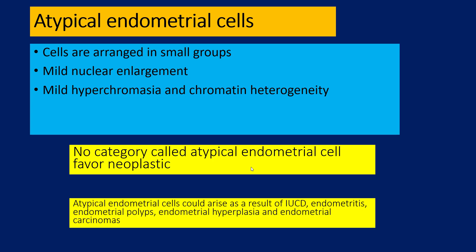So this concludes the endocervical group. We are going to next move on to the endometrial group — it's a much shorter one. Atypical endometrial cells: the important thing to start with is that there is no category called atypical endometrial cells favor neoplastic. So it's either atypical endometrial cells or endometrial adenocarcinoma. Atypical endometrial cells can occur as a result of IUCD — so it is extremely important to read the clinical request form — endometritis, endometrial polyp, endometrial hyperplasia, or endometrial carcinoma. All of them can lead to atypical endometrial cells. A well-differentiated endometrial carcinoma can just lead to minimal atypia, resulting in calling them atypical endometrial cells.